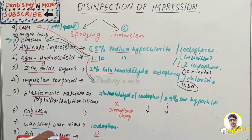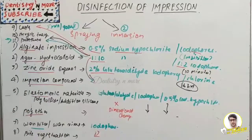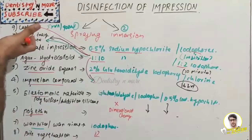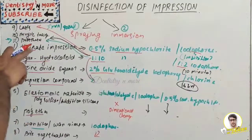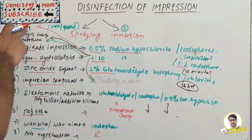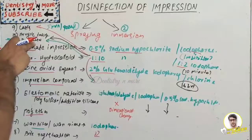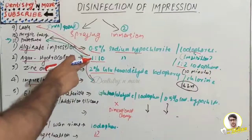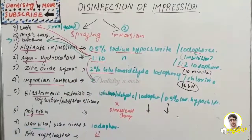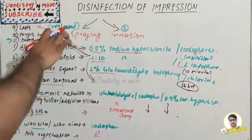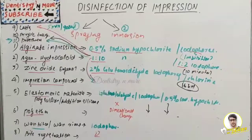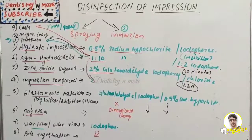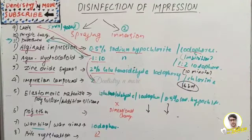Wax bites and wax rims commonly use iodophore. For bite registration, follow the method corresponding to the impression material used. Casts, acrylic trays, and dental appliances commonly use 1:10 sodium hypochlorite and iodophore, with microwave irradiation as an option at 900 watts for five minutes. This is a simple but frequently examined topic in prosthodontics.